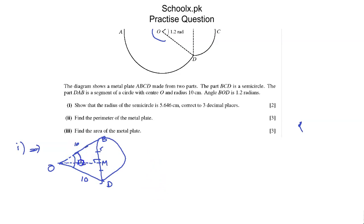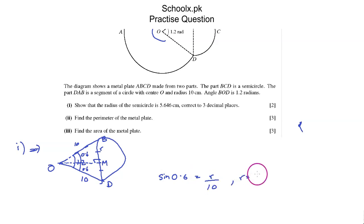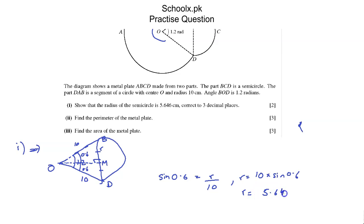This perpendicular also bisects the angle, so each half-angle is 0.6 radians. Using sine: sin(0.6) = R / 10, so R = 10 × sin(0.6). Computing this gives R = 5.646 cm. We have now shown that the radius of the semicircle is 5.646 cm.